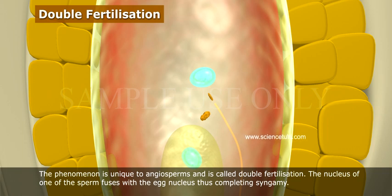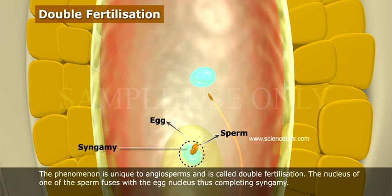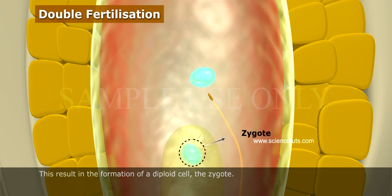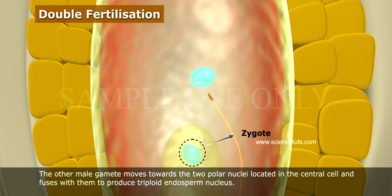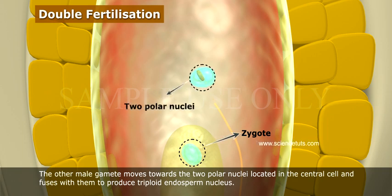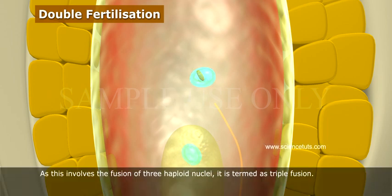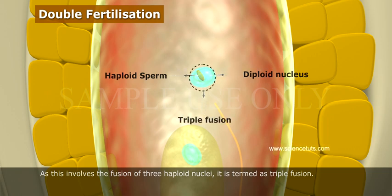The nucleus of one of the sperms fuses with the egg nucleus, thus completing syngamy. This results in the formation of a diploid cell — the zygote. The other male gamete moves towards the two polar nuclei located in the central cell and fuses with them to produce a triploid endosperm nucleus. As this involves the fusion of three haploid nuclei, it is termed triple fusion.